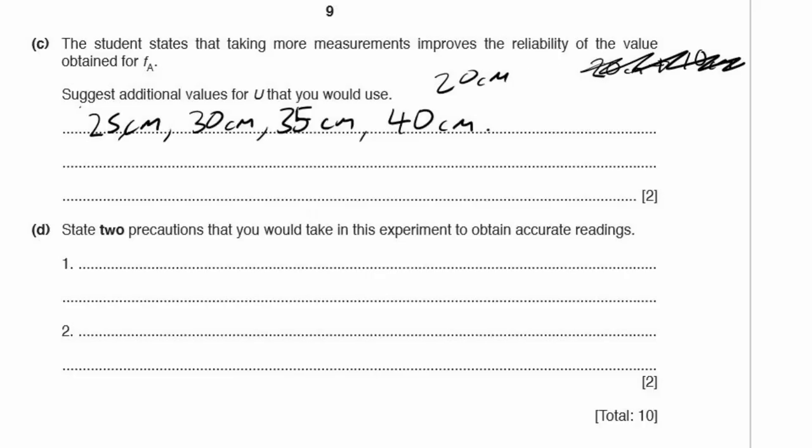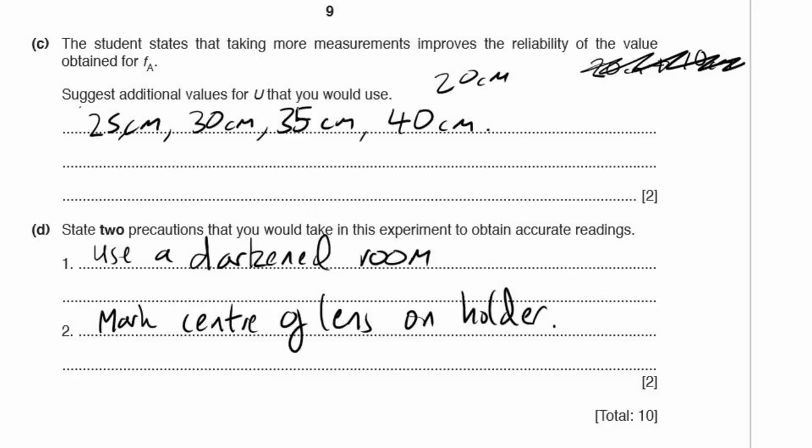Part D. State two precautions you would take in this experiment to obtain accurate readings. If you've ever tried doing one of these experiments, it's pretty difficult to see. Do it in a darkened room. Something else that's difficult is to measure from the centre of the lens over to the wall or the point where it focuses. So mark the centre of the lens on the lens holder. Two very good things that will work well.